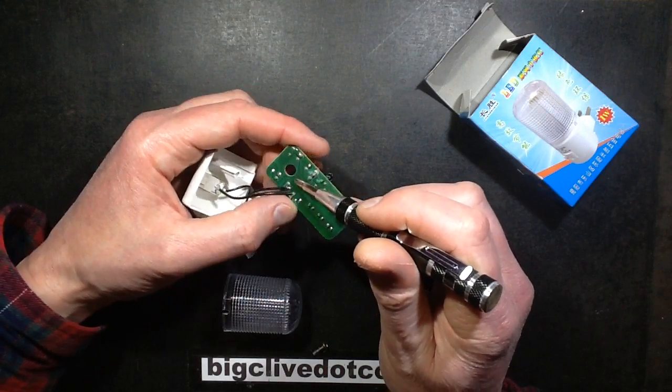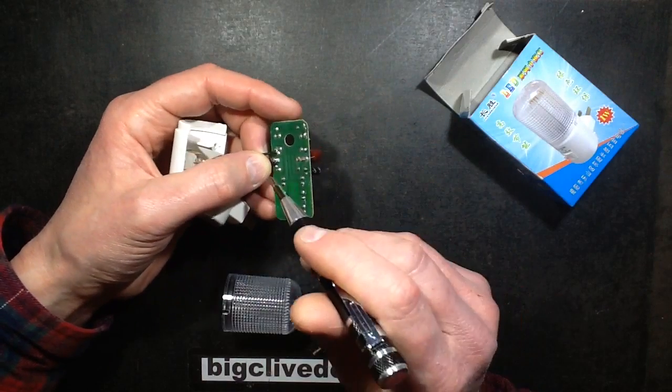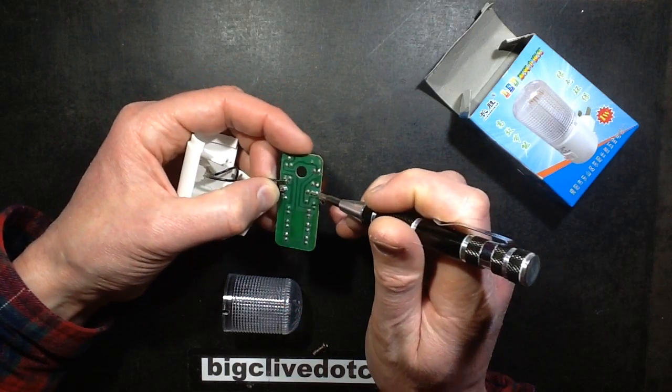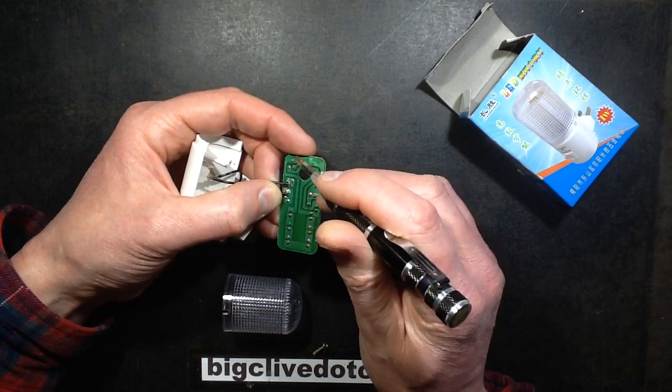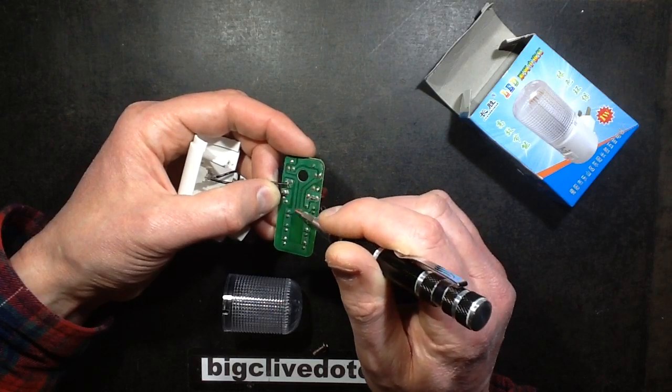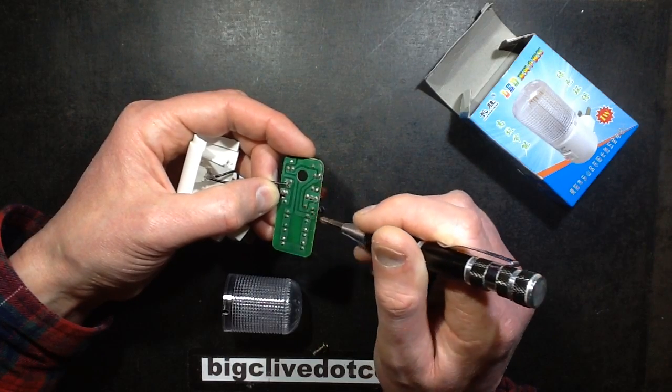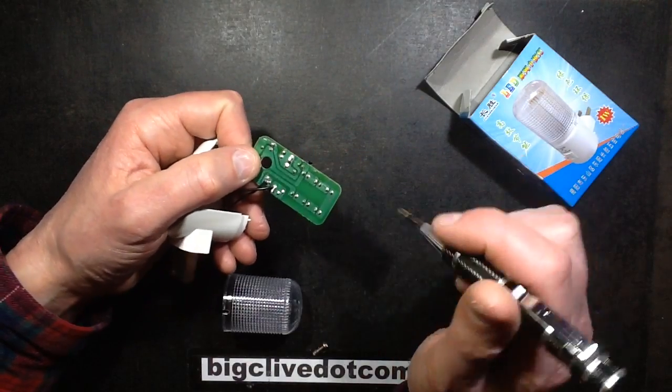So the mains comes in. This terminal goes straight through the rectifier. This one goes through the capacitor, then through the rectifier. Then there's a resistor in series with the LEDs. And the capacitor is connected just directly across the rectifier, which you'd kind of expect. And then there's six LEDs in series.